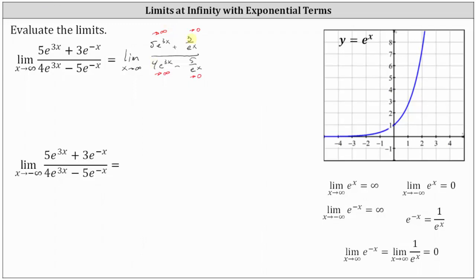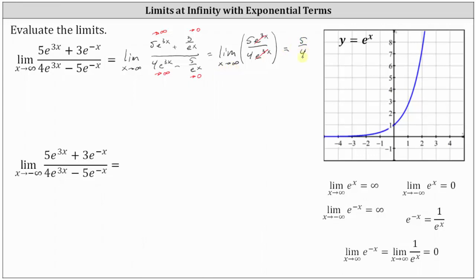First, since we know 3 divided by e to the x and 5 divided by e to the x both approach 0, the given limit is going to be the same as the limit of just 5 times e to the 3x divided by 4 times e to the 3x as x approaches infinity. We can simplify — e to the power of 3x divided by itself simplifies to 1. So we just have the limit of 5 fourths as x approaches infinity, which is simply 5 fourths. This is one method to determine this limit.